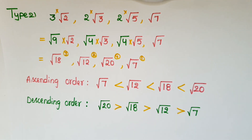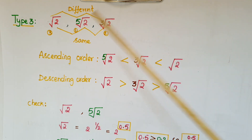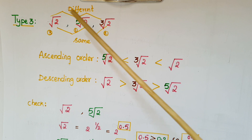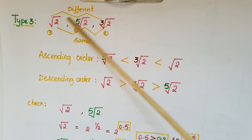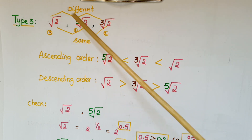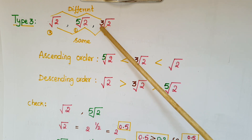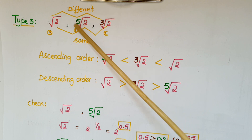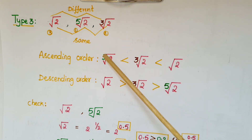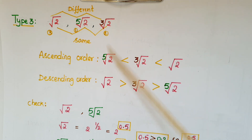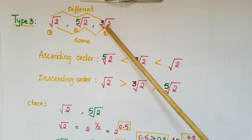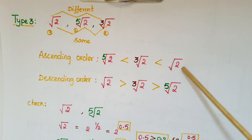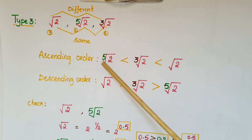This is another type of problem: square root of 2, fifth root of 2, cube root of 2. Here all numbers are the same — 2 — but the root indices are different: square root, fifth root, cube root. First find which index is the largest — here 5 is the largest — so the fifth root gives the smallest value. So fifth root of 2 is smallest, then cube root of 2, then square root of 2. This is the ascending order; write in reverse for descending order.